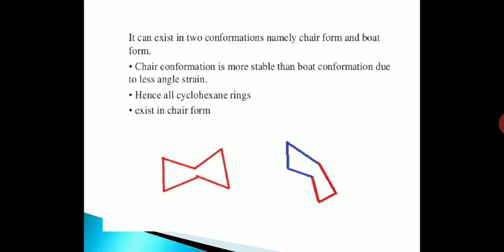The steroid ring system can exist in two conformations: the chair form and the boat form. The chair conformation is more stable than the boat conformation due to less angle strain. Hence, all cyclohexane rings exist in the chair form.